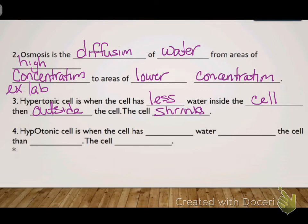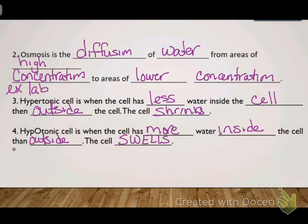Another thing that could happen is osmosis could occur and water could go into the cell. A hypotonic cell is when the cell has more water inside the cell than outside, and this causes the cell to swell.